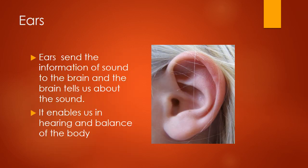The second sense organ is the ears. Ears send information about sound — just as you are listening to this lecture, this information is taken by your ears to the brain, and your brain tells you that you are listening to these words. Ears are also responsible for the balance of the body. We maintain a straight, balanced posture because of our ears.